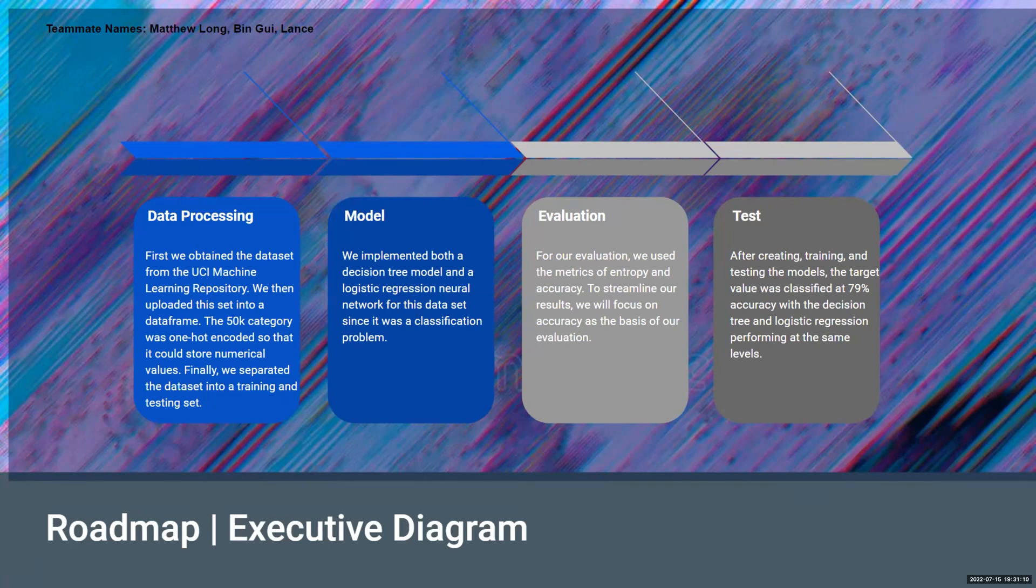First we obtained the dataset from the UCI Machine Learning resource trees, and we then uploaded the set into a dataframe. The 50k category was one-shot encoded so that it could store numerical values. Finally, we separated the dataset into a training and testing set.